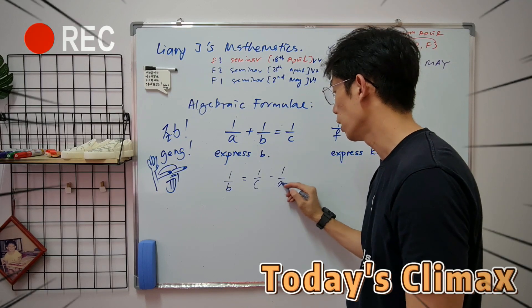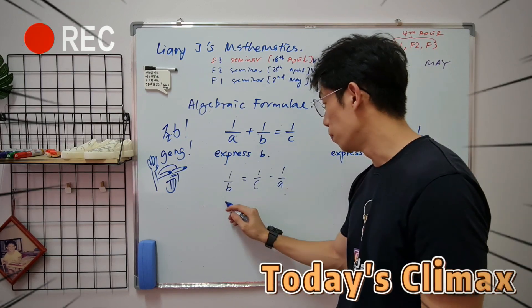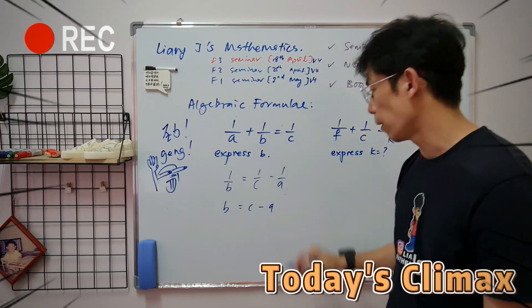1 over C minus 1 over A. B equals to C minus A.